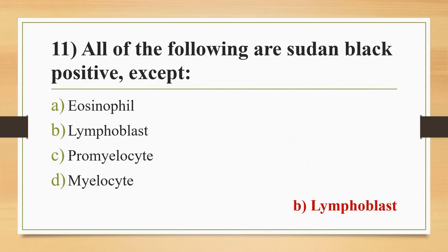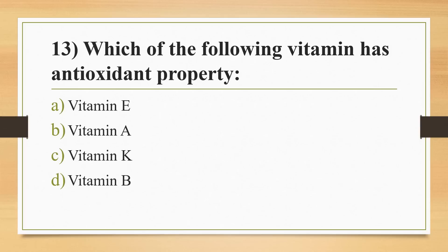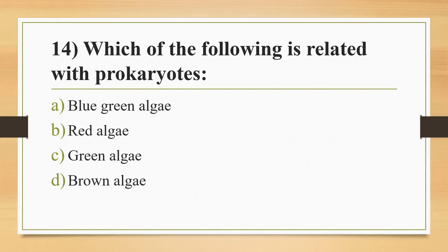Twelfth question: law of multiple proportion was discovered by? Options: John Dalton, Richter, Joseph Proust, or Lavoisier. Answer is Option A, John Dalton. Law of multiple proportion was discovered by John Dalton. Thirteenth question: which of the following vitamin has antioxidant property? Options: vitamin E, vitamin A, vitamin K, or vitamin B. Answer is Option A, vitamin E.